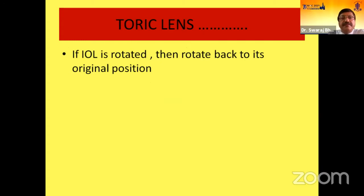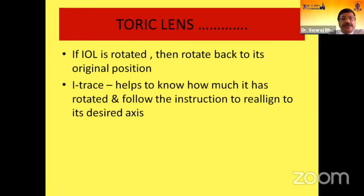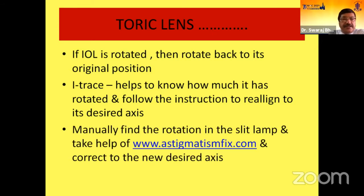For toric lens — very simple. If the IOL is rotated, rotate it back to its original position. If you have access to eye tracking, it helps to know how much it has rotated, and you follow the instructions to realign to its desired axis. Or if you don't have that, manually find the rotation at the slit lamp and take the help of astigmaticfix.com to correct to the new desired axis.